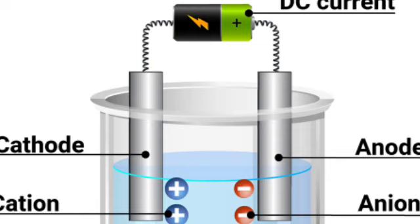Insert the key to flow current in the circuit. Carefully observe the electrodes after three to four minutes. Do you observe gas bubbles near the carbon rod electrodes? You observed that passage of electric current in acidic water solution causes chemical changes in the solution. This is known as the chemical effect of electric current.